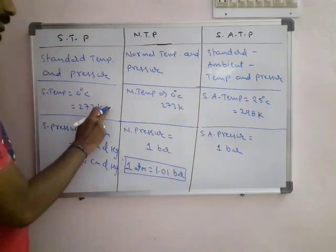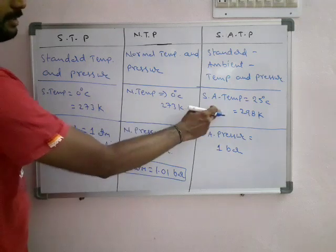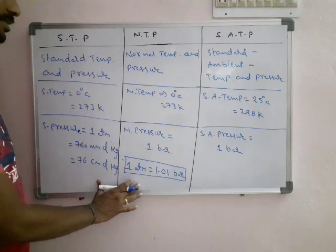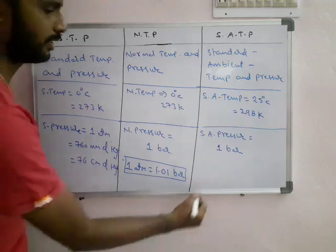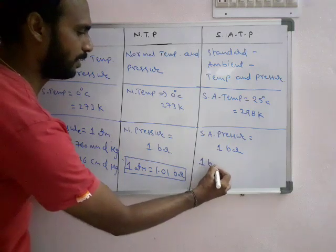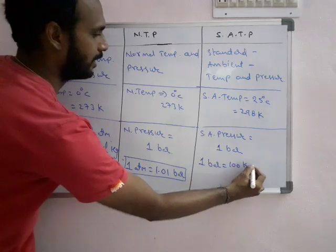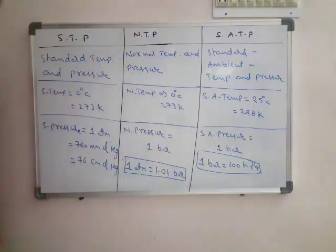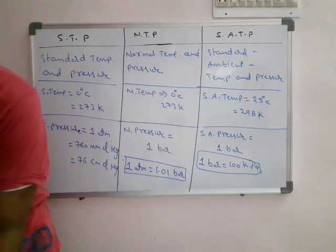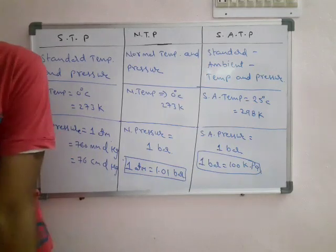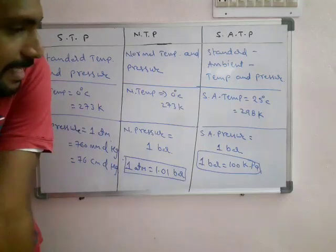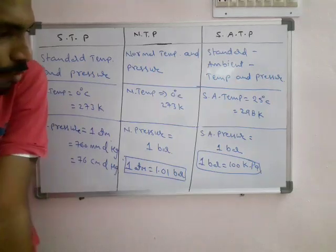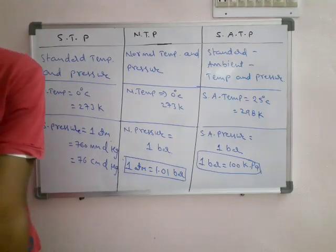Comparing the three: STP and NTP have the same temperature, but different pressures. NTP and SATP have the same pressure (1 bar), but different temperatures. There is also one relation: 1 bar is treated as 100 kilopascals approximately. The exact value is 101 kilopascals. This is the main relation between STP, NTP, and SATP.